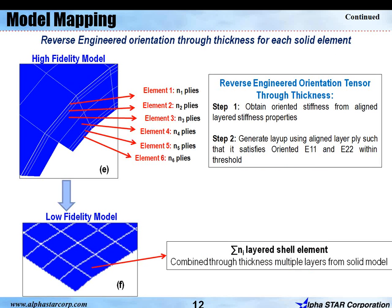The orientation tensor in the receiver mesh is used to create a reverse-engineered layup in each element, performed through two steps. Step one: obtain orientation stiffness from aligned layer stiffness properties. Step two: generate layups using aligned layer plies such that it satisfies oriented E11 and E22 within a threshold. In other words, the orientation tensor in the mapped structure is used to generate oriented stiffness, and E11 and E22 from the orientation stiffness — along with the aligned layer properties — generate the orientation through-thickness layup for each element. This is for the high-fidelity model from element one through six through the thickness; for the low-fidelity model, this solid model can be squeezed into one shell element with all the plies stacked together.